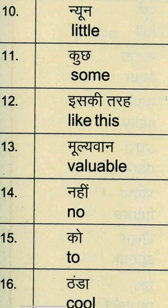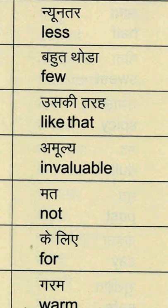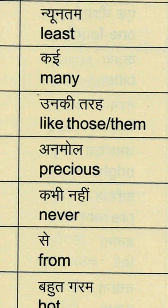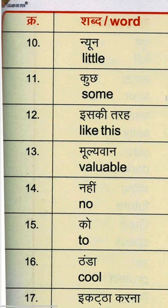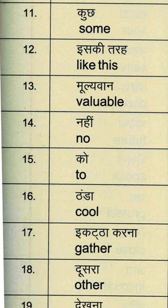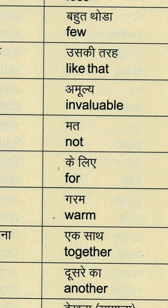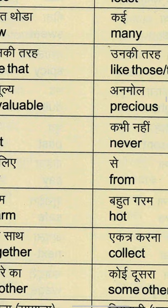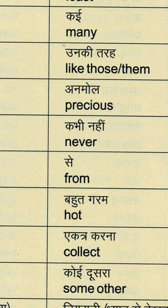इसकी तरह — like this — L-I-K-E T-H-I-S. उसकी तरह — like that — L-I-K-E T-H-A-T. उनकी तरह — like those — L-I-K-E T-H-O-S-E — या like them — L-I-K-E T-H-E-M. मूल्यवान — valuable — V-A-L-U-A-B-L-E. अमूल्य — invaluable — I-N-V-A-L-U-A-B-L-E. अनमोल, जिसकी कोई मोल न हो — precious — P-R-E-C-I-O-U-S.